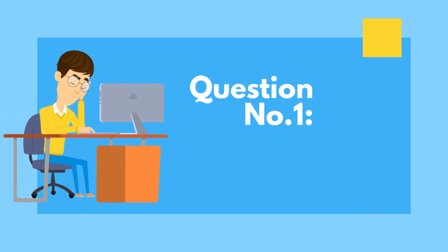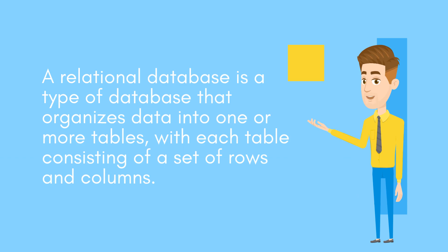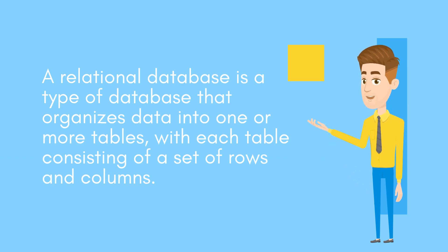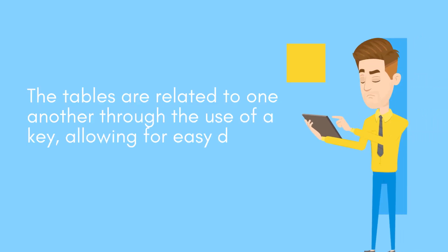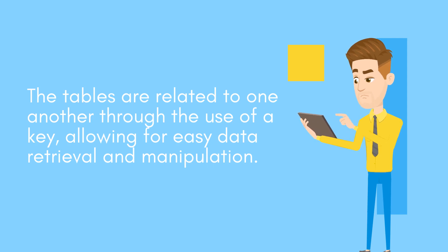Question number one: What is a relational database? A relational database is a type of database that organizes data into one or more tables, with each table consisting of a set of rows and columns. The tables are related to one another through the use of a key, allowing for easy data retrieval and manipulation.